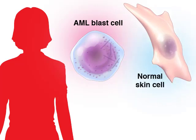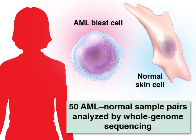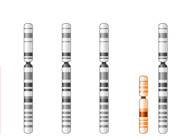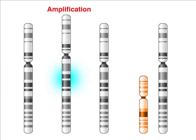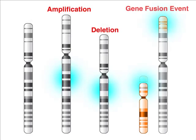Four different approaches were used to sequence the samples. For 50 pairs of samples, whole genome sequencing was performed. Whole genome sequencing can detect somatic mutations in the genome, including regions outside of genes. Although not as sensitive as other sequencing strategies, it can also identify structural changes in the genome, such as amplifications, deletions, and gene fusion events.